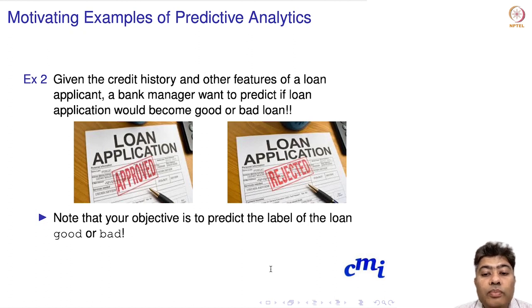Our objective is to predict the label of the loan, whether the potential customer is going to be a good customer or bad customer. If it is a good customer, they will take the loan, pay the interest and EMI on time, and return the capital on time. But if it is not a good customer, they may default on their loan and the bank may incur a big loss. This is a very important problem for the bank manager.